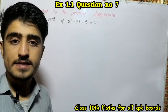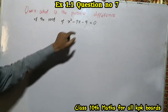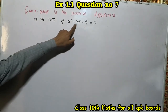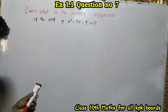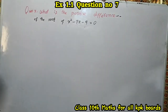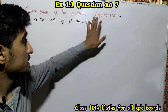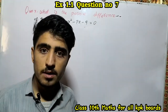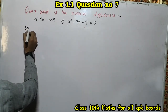Bismillahirrahmanirrahim. Exercise 1.1, question number 7: What is the positive difference of the roots of the equation x² - 7x - 9 = 0?